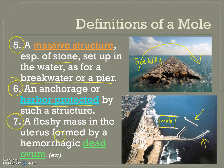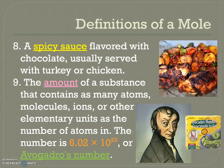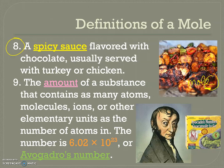Definition seven: a fleshy mass in the uterus formed by a hemorrhagic dead ovum — I did not include a picture of that, you can let your imagination do that. Definition eight is quite a delicious definition — mole, with a different accent and pronunciation. It's usually a Caribbean-style seasoning made with chocolate, very savory, used on top of turkey or chicken. Highly recommend it — it is delish.